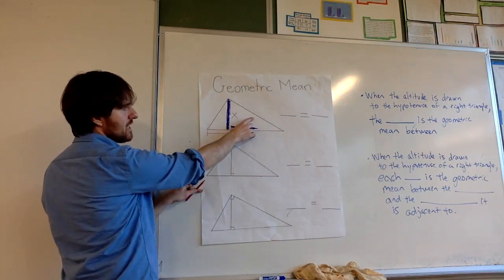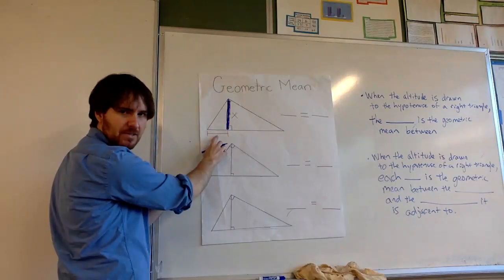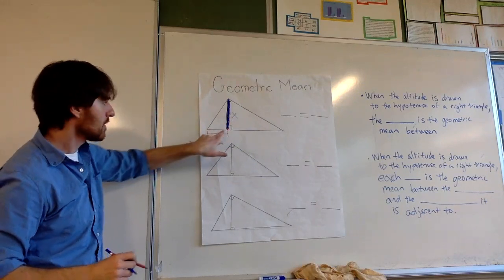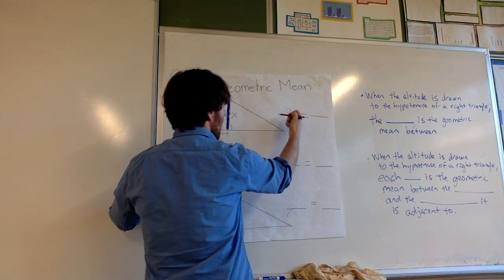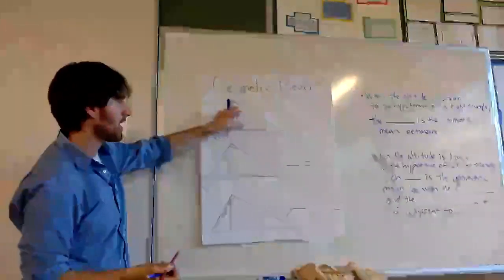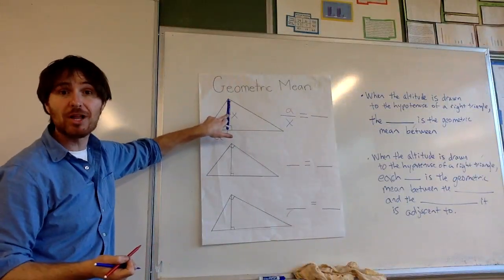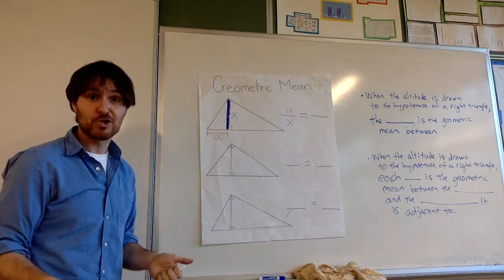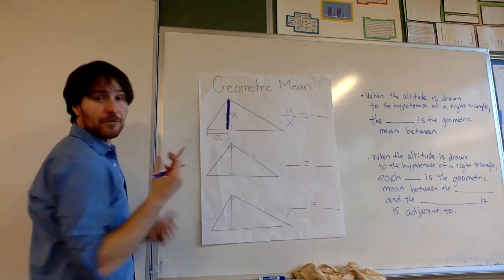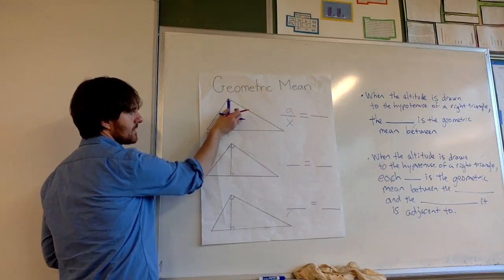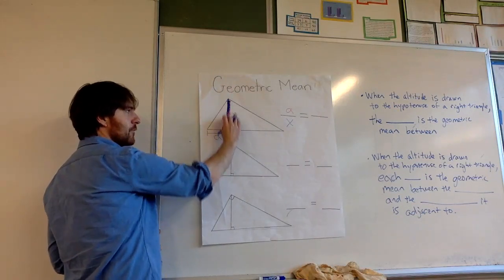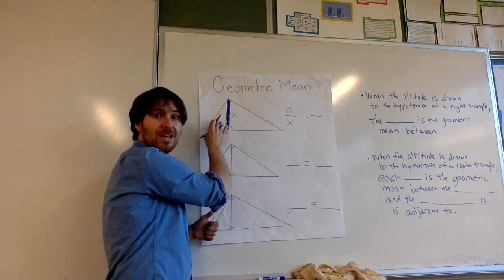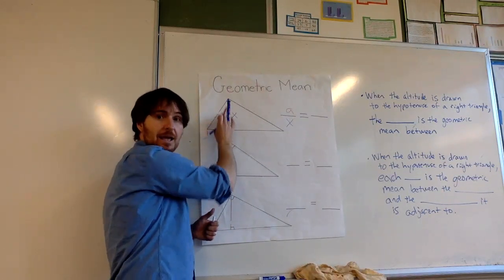This smaller leg of the medium right triangle — let's label this length a. The altitude itself we'll call x, placed in the mean position. If I'm going small triangle to medium triangle scale factor, I have an a-to-x scale factor. This is the small leg of the small triangle; this is the small leg of the medium triangle — these are corresponding sides of similar triangles.